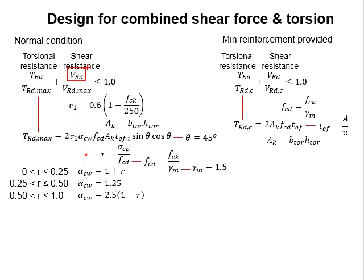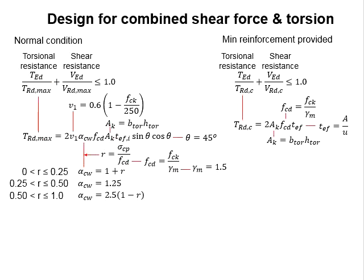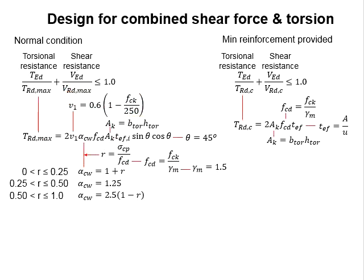We have discussed Ved in the previous lecture along with the equations to determine Vrd,max. The torsional load was also discussed. Now we look at Trd,max, which is the maximum torsional resistance of the section. Trd,max is determined from this equation as a function of nu_1, which is associated with the shear resistance. In fact, it uses the same expression for nu_1 as in the shear resistance, and includes alpha_cw, similarly defined as in the maximum shear resistance Vrd,max.